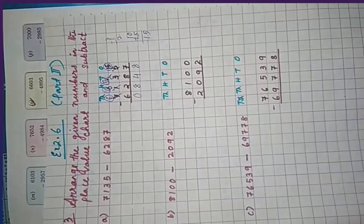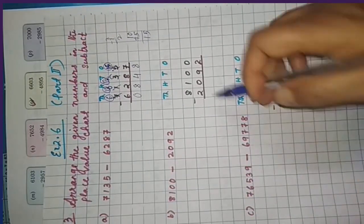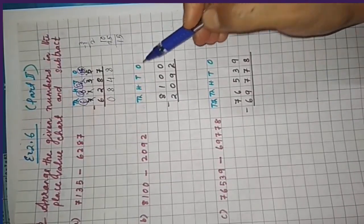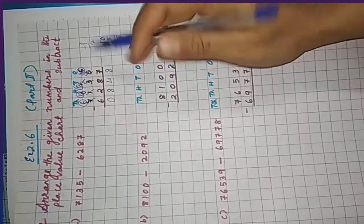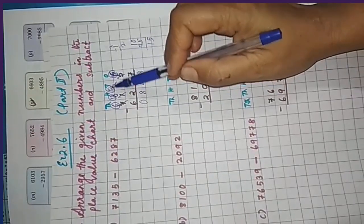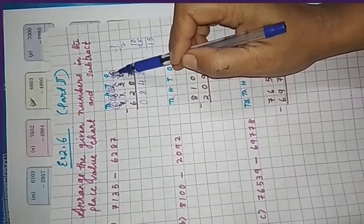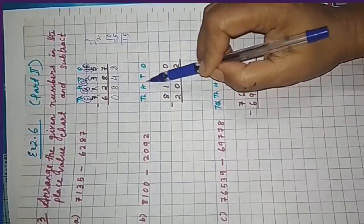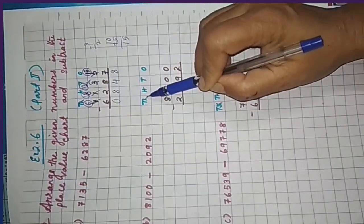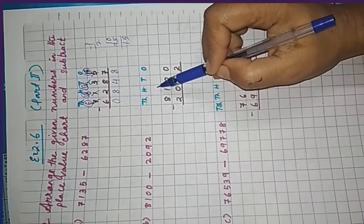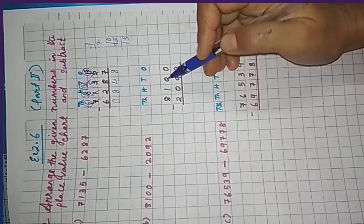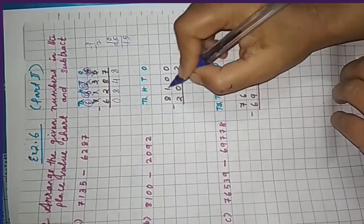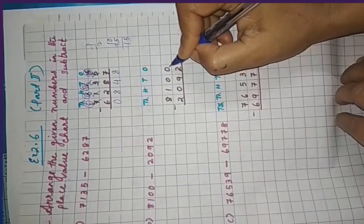Next: 8100 minus 2092. When arranging in the place value chart, leave one block for borrowing — it takes more space otherwise and looks clumsy. If you leave one block and write ones, tens, hundreds, thousands, it will look neater. Now write 8100 in the proper place values.